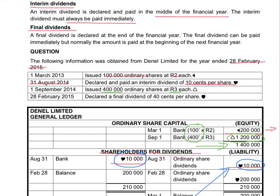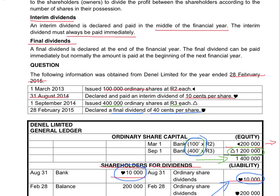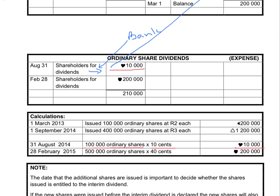They declare a final dividend of 40 cents per share. How many shares were already issued? The 100,000 plus the 400,000 — so we pay dividends on 500,000 shares at 40 cents per share. At the end of the year we have 500,000 ordinary shares and we pay 40 cents per share, so the dividend will be R200,000. Ordinary share dividends is an expense, so the expense increases on the debit side. My total expense for ordinary share dividends is therefore R210,000.